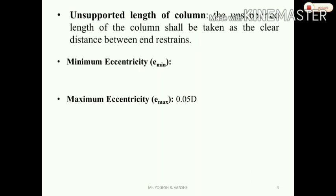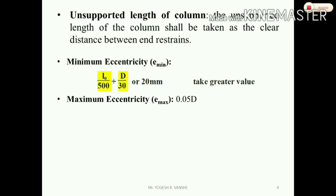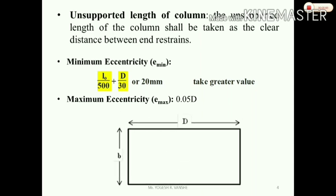The next topic is minimum eccentricity. Eccentricity is used in the theory and analysis of structures. There are two criteria for eccentricity. The formula is: e_min = L0/500 + D/30, where L0 is the unsupported length and D is the longer dimension of the column. The minimum value is 20 mm. These two give the maximum value, and minimum eccentricity is whichever is greater. The maximum eccentricity formula is 0.05 × D, where D is the column dimension.